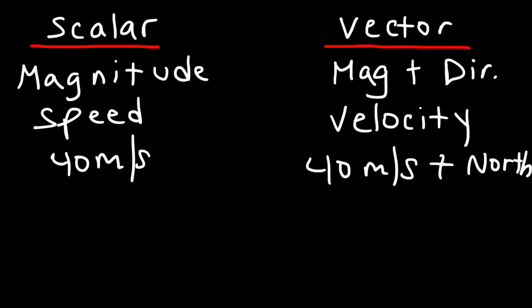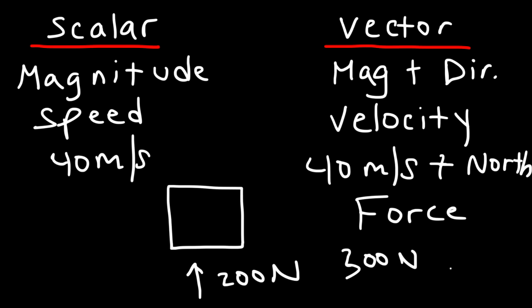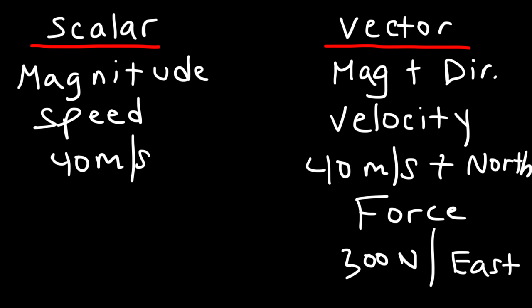That's basically a vector — it combines magnitude with direction. Another example would be force. If I have a box, I can apply a force of 300 newtons directed east, or a force of 200 newtons directed north. The 300 newtons is the magnitude of the force, and the direction east is the second component, which makes it a vector. Make sure you understand that a vector has both magnitude and direction.